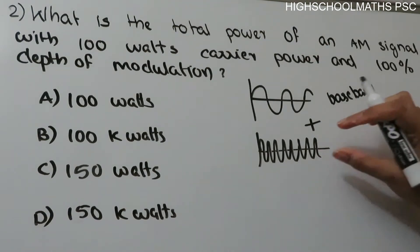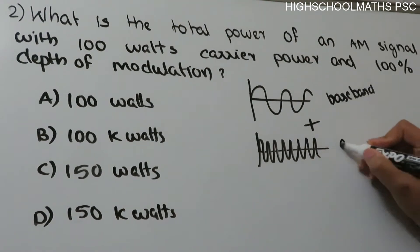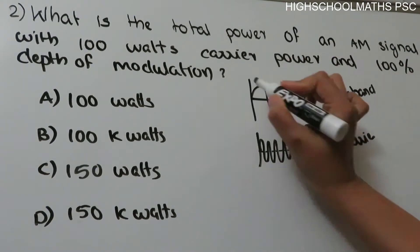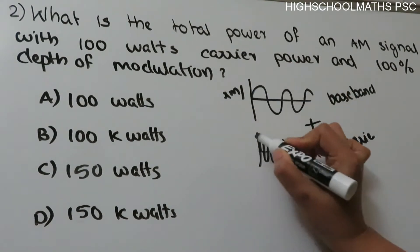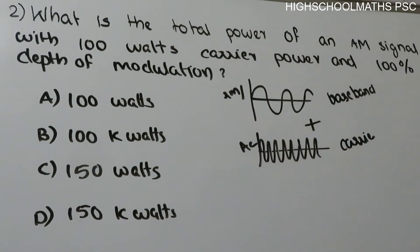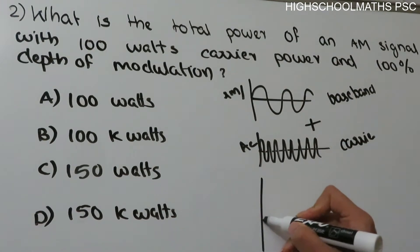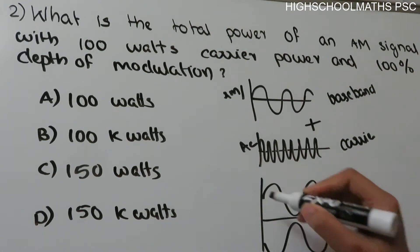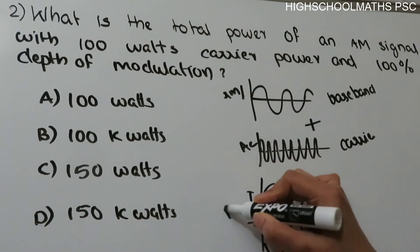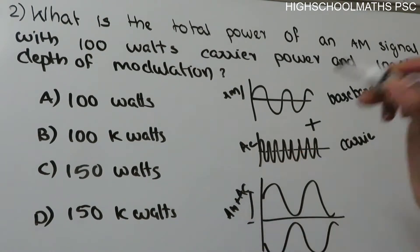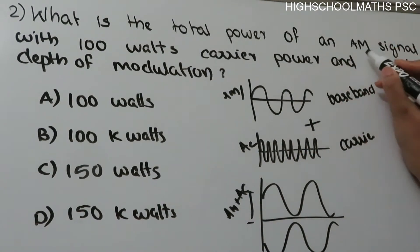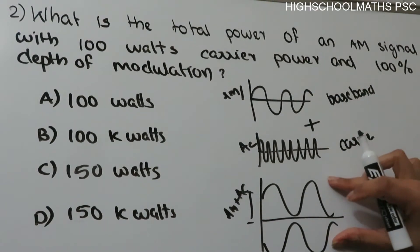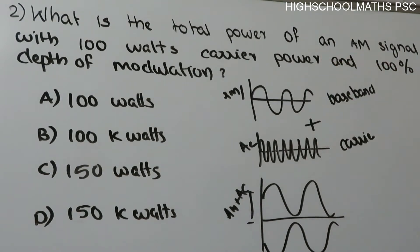To strengthen the signal: we have the high frequency carrier signal, the modulating signal, the baseband signal, and the message signal. In AM (amplitude modulation), we combine these to get the amplitude modulated waveform. The total power of one amplitude modulated signal is what we need to calculate.